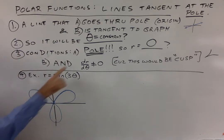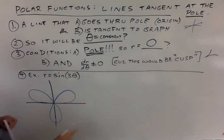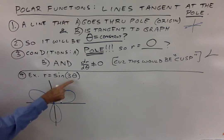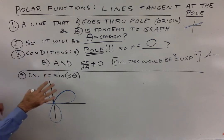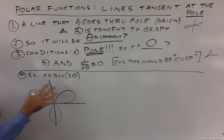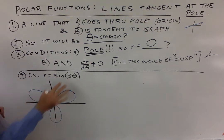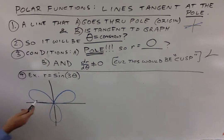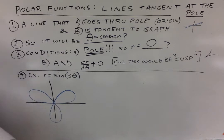Here's an example. The condition is r equals zero. Here's the polar function: r equals sine of three theta. Given enough time you should be able to graph that — it takes a little effort because it's three theta, but it can be done. Now on this graph, think about what the tangent lines would look like. They have to be lines that go through the pole and are tangent to your graph at the pole.